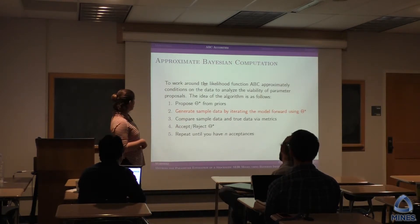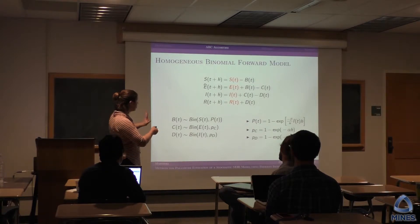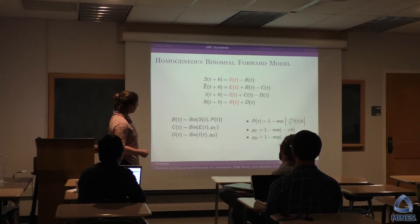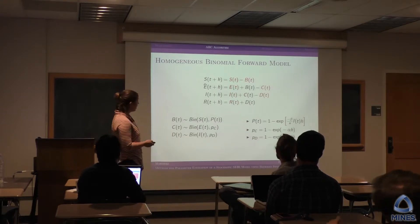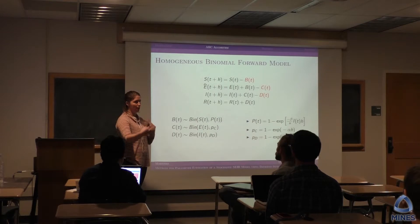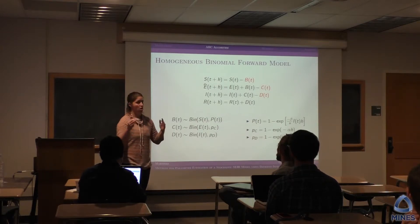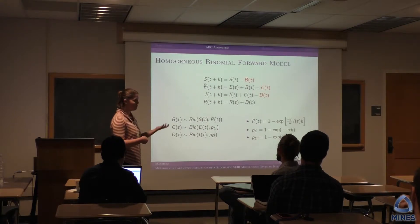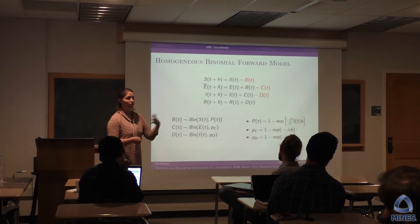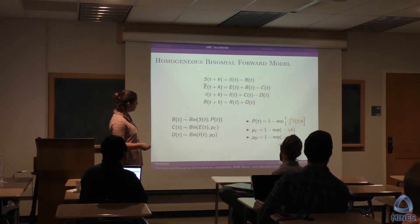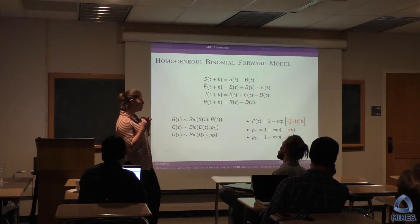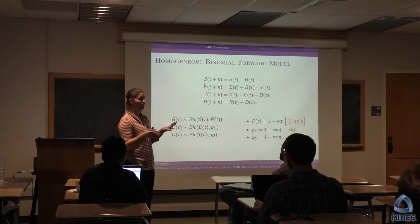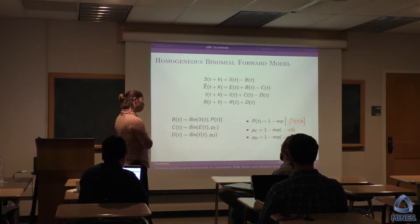I'm going to talk about the forward model and a bit about metrics. Here's our discretized ODE: you compute time plus h depending on the previous time. S, E, I, and R are susceptible, exposed, infectious, and removed at time t. The stochasticity comes in via B, C, and Z terms — the transition populations — which are generated by binomials. You draw from your potential susceptible people with some probability of becoming exposed. These probabilities depend on that ODE, so the infection rate is determined by contacts with infectious individuals. The conditional probabilities can be derived directly from the ODE.